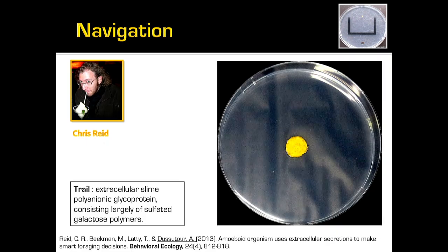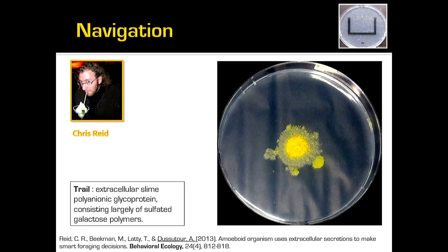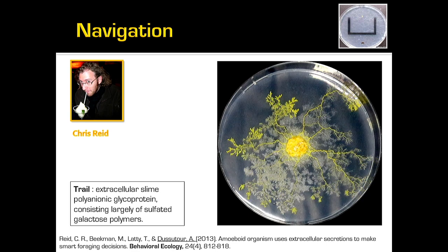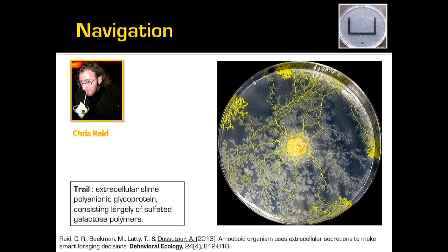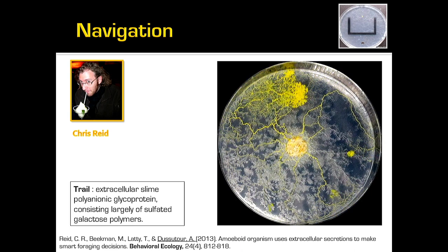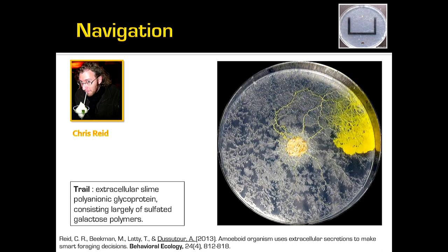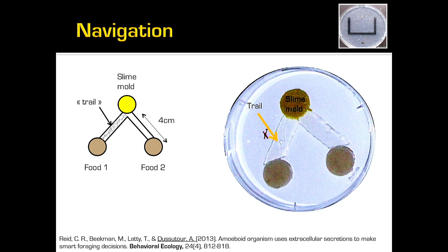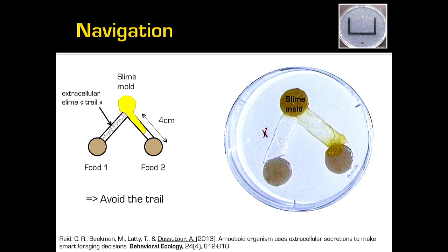A second example is navigation. If you look at slime mold growing on an agar plate, you will see it makes pseudopods and moves around. When it has been somewhere and leaves, it leaves a trail — a mucus, an extracellular polyionic glycoprotein. We wondered if slime mold could use this trail like ants do for exploration. In a simple setup with a trail on one branch and nothing on the other, in almost 100% of cases the slime mold would pick the branch without a trail — it would avoid the trail.